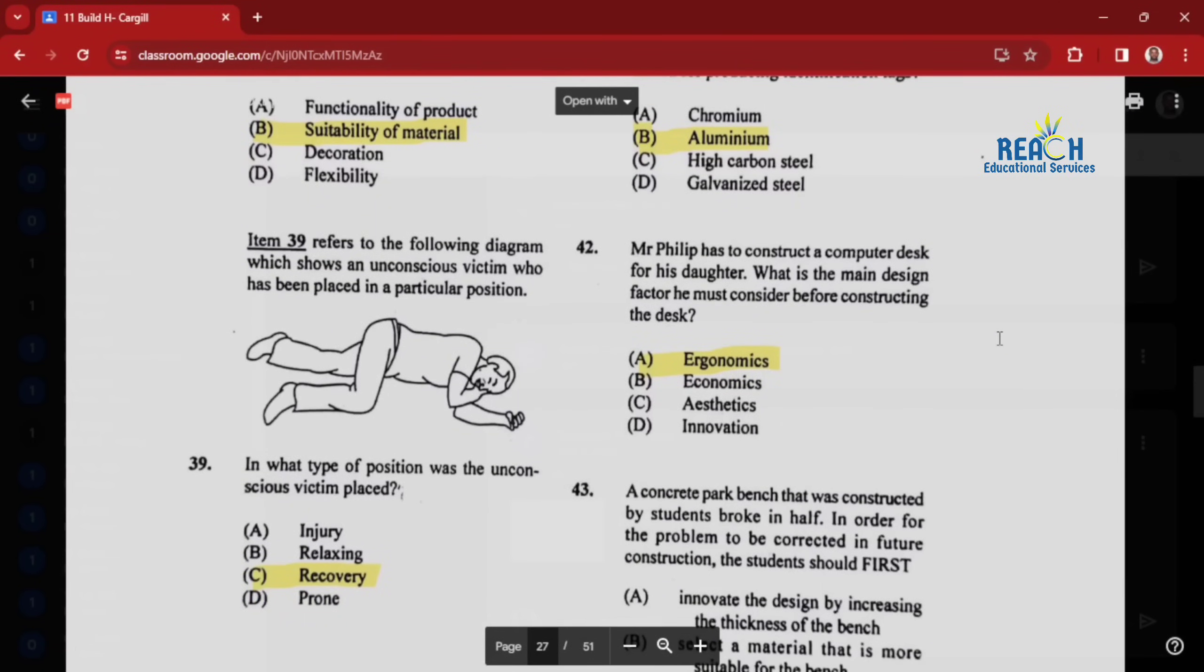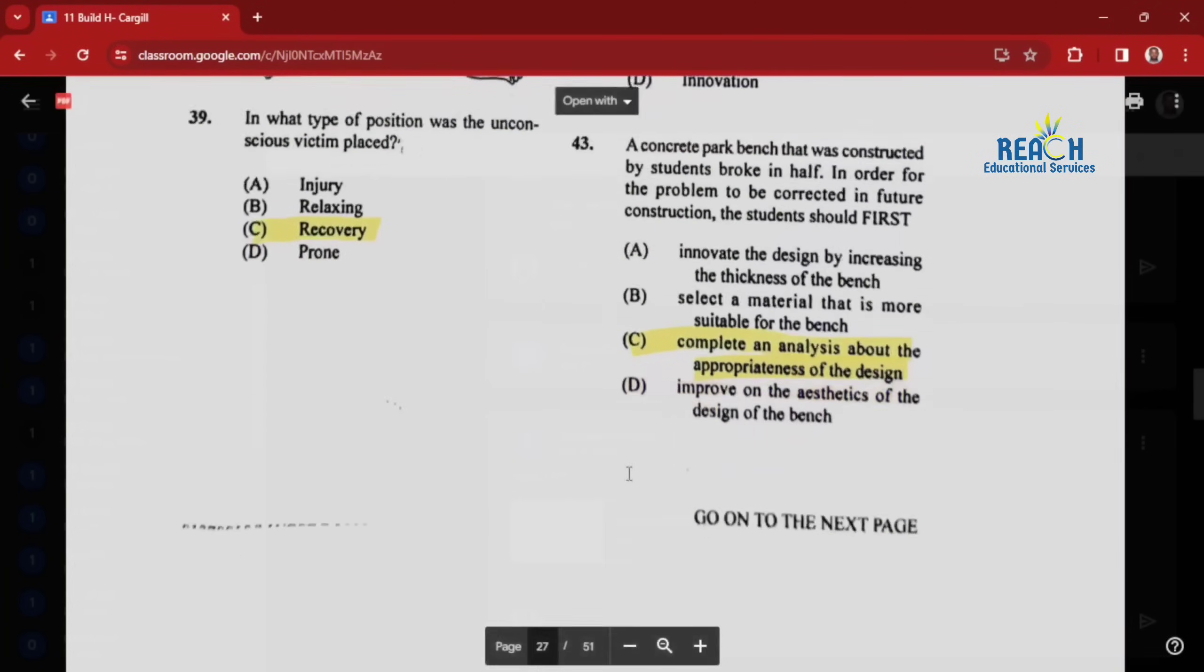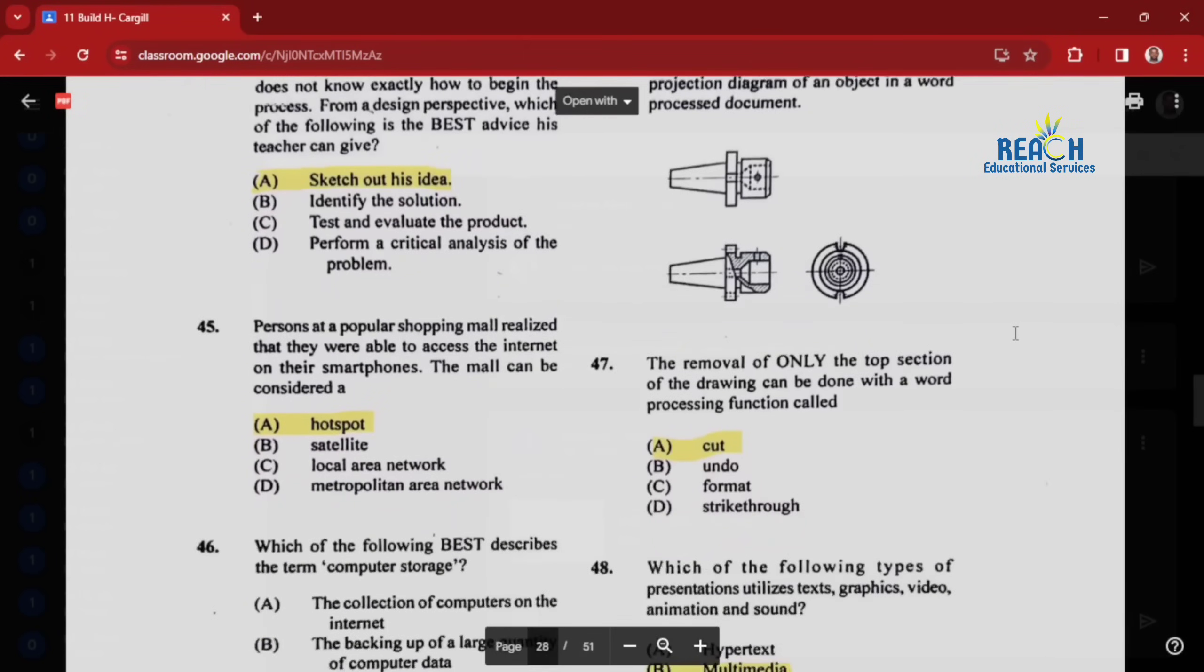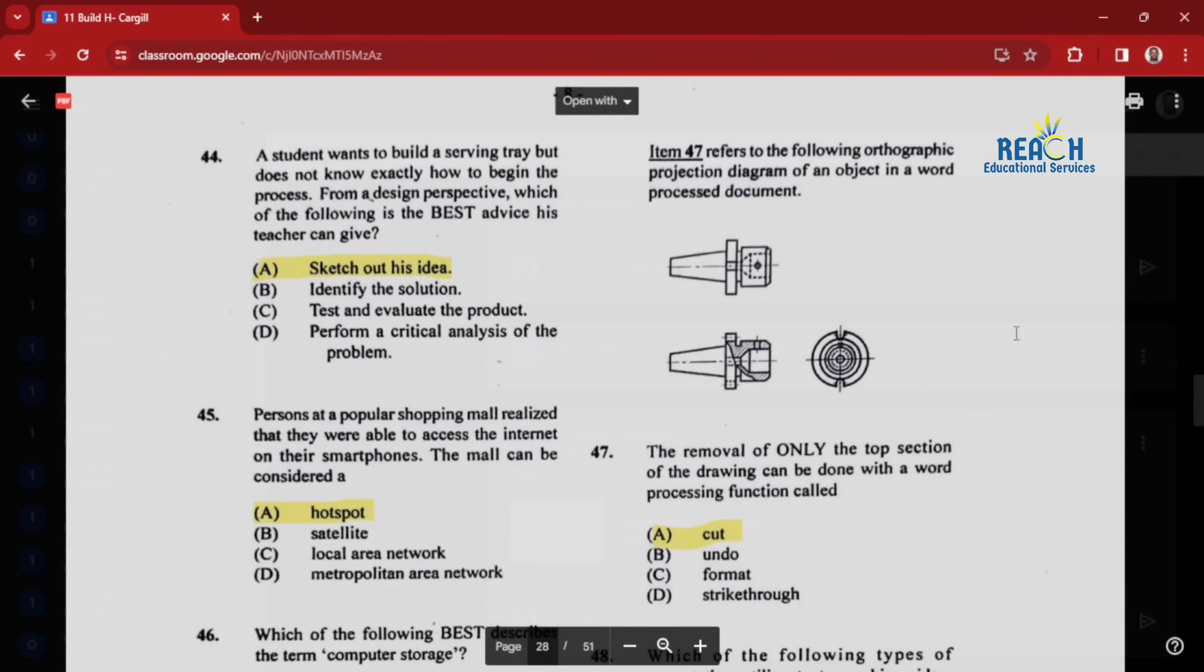Question forty-two: Mr. Philip has to construct a computer desk for his daughter. What is the main design factor he must consider before constructing the desk? Ergonomics, which speaks to how we design things to best fit the human body. Question forty-three: a concrete park bench that was constructed by students broke in half. In order for the problem to be corrected in future construction, the students should first complete an analysis about the appropriateness of the design. Question forty-four: a student wants to build a serving tray but does not know exactly how to begin the process. From a design perspective, what is the best advice the teacher can give? That would be to sketch the idea - just always sketch it out first.